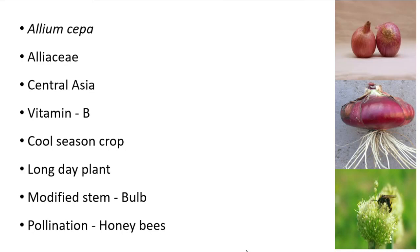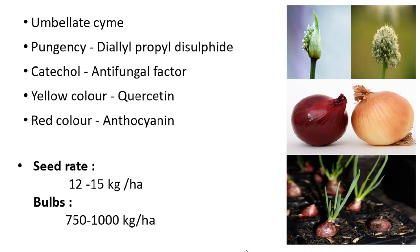Onion is a long day plant where a day length of more than 14 hours is required for its growth. The edible part of onion is the bulb, which is a modified stem. Pollination in onion is highly mediated by honeybees. The inflorescence in onion is umbellate cyme, where numerous flowers and flower stalks arise from the same central point.